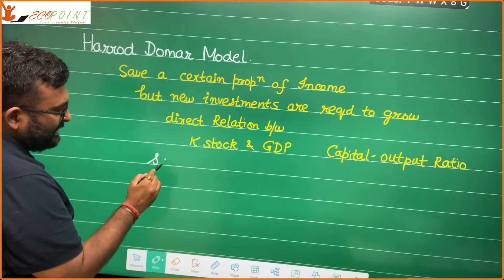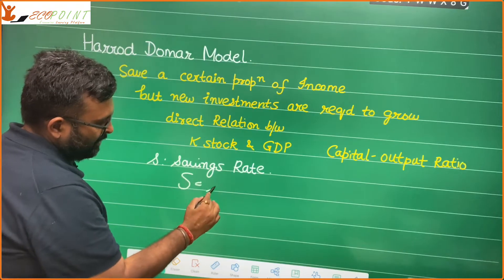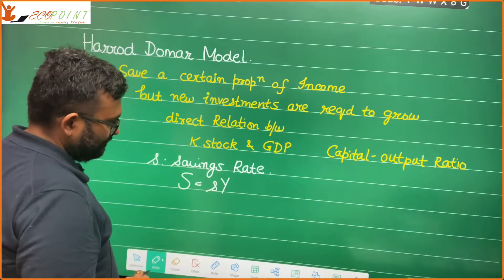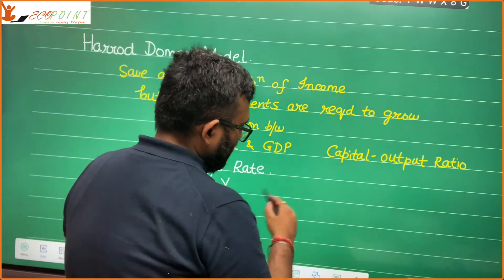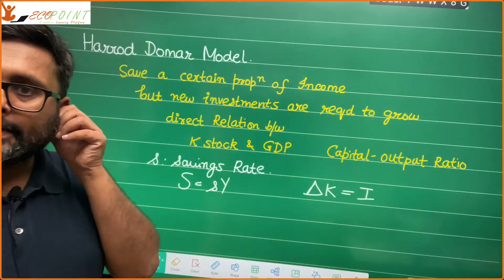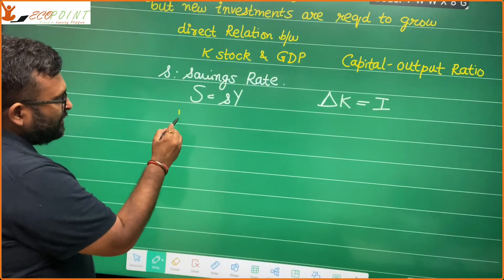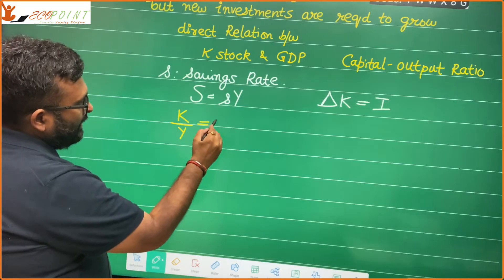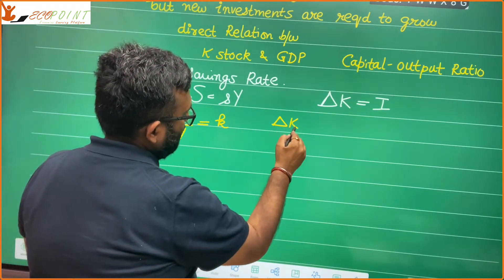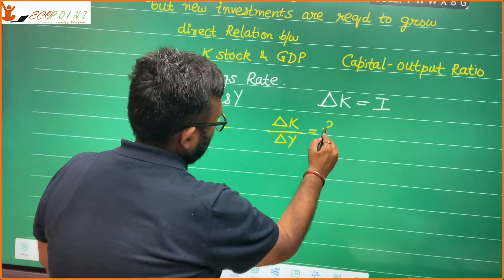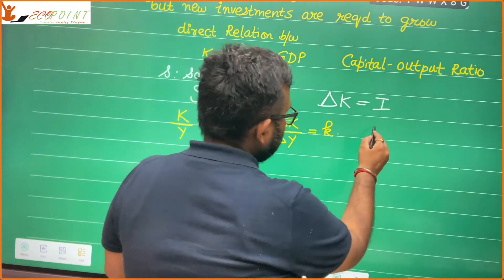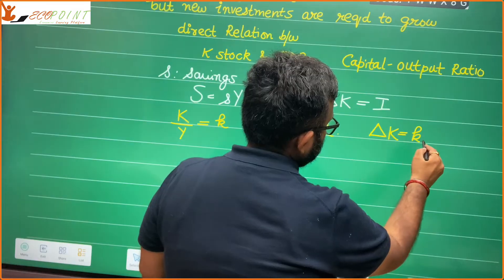Now assume that small s is the savings rate. So what is capital S? That is total savings in the economy. Of the total income Y, you are saving small s proportion, so capital S equals small s times Y. What are the additions to the capital stock? Delta K — that is equal to investment. The capital-output ratio is small k, so delta K by delta Y is also equal to small k, meaning I can write delta K as small k times delta Y.